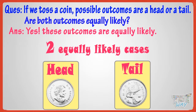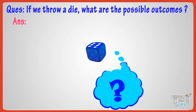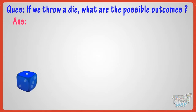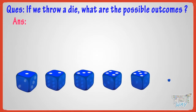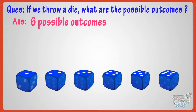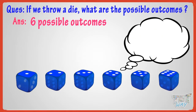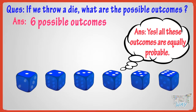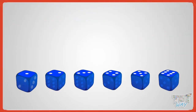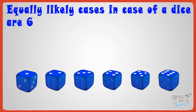Now let's take another example. If we throw a dice, what are the possible outcomes or cases? It is one, two, three, four, five, or six — that is, six possible outcomes. And are all these numbers equally likely? That is, are all numbers equally probable to come if we throw a dice? Yes, all these numbers are equally probable — equally likely. So, equally likely cases in the case of a dice are six, that is, numbers one to six.